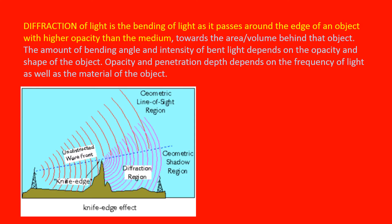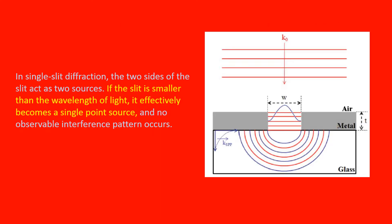Diffraction of light is the bending of light as it passes around the edge of an object with higher opacity than the medium. If the slit is smaller than the wavelength of light, it effectively becomes a single point source.